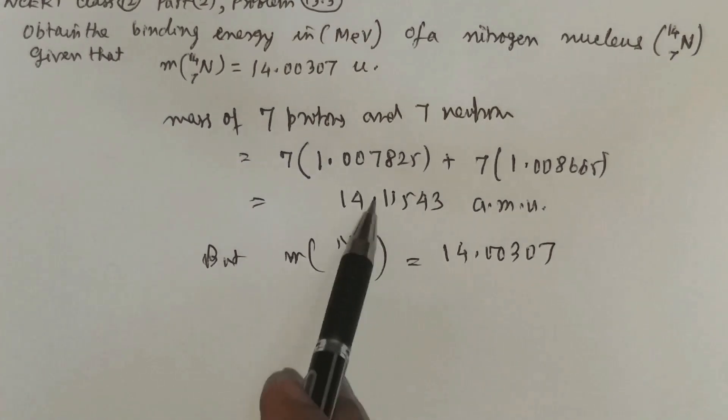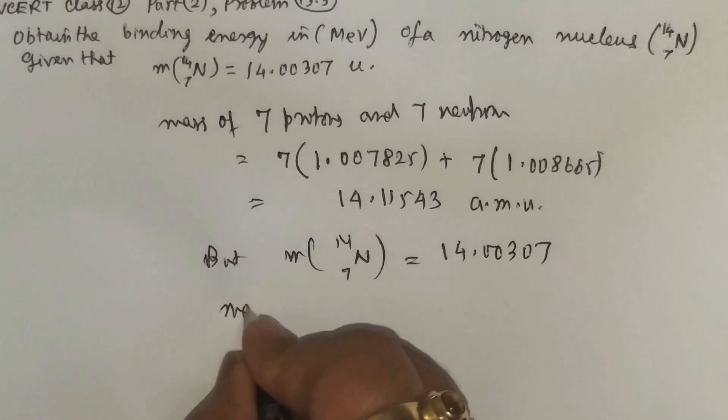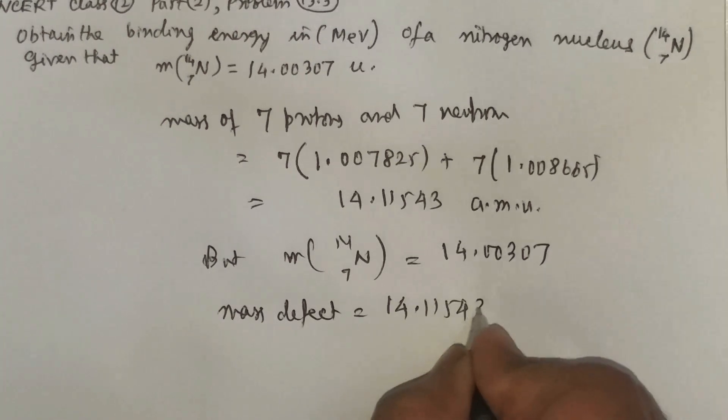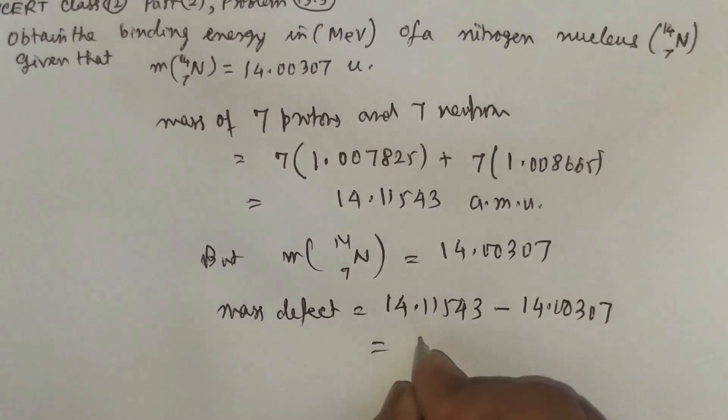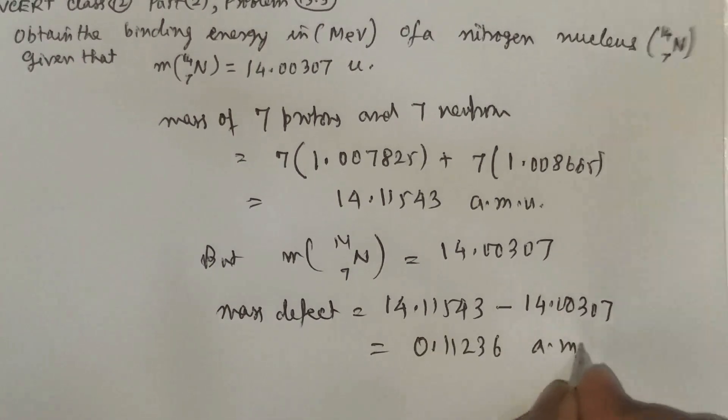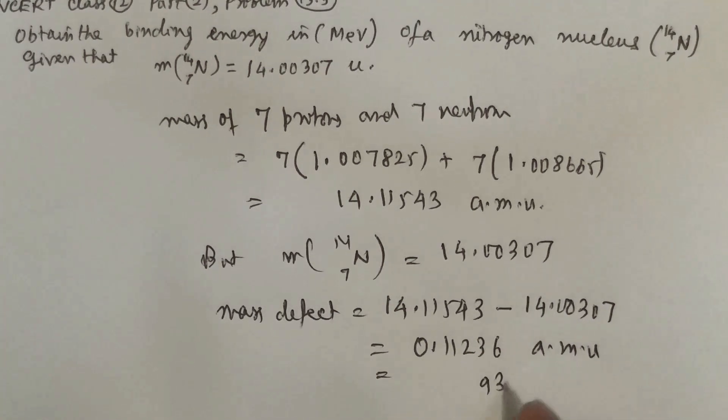So what we understand is during the formation of the nucleus there is some mass which is decreased. So that is called mass defect. How much it will be? 14.11543 minus 14.00307 atomic mass units, it is 0.11236 atomic mass units. And when one atomic mass unit disappears, 931.5 million electron volts reappears.